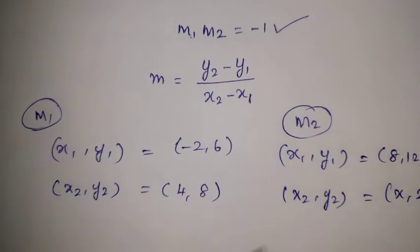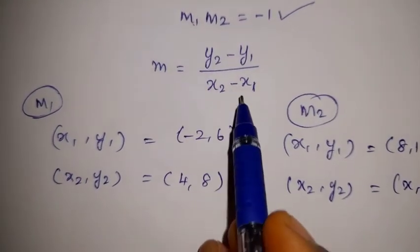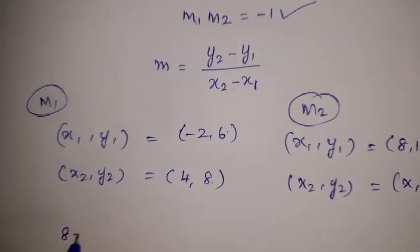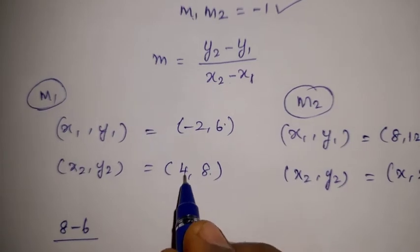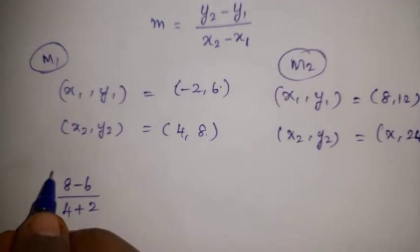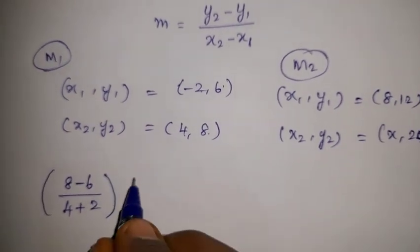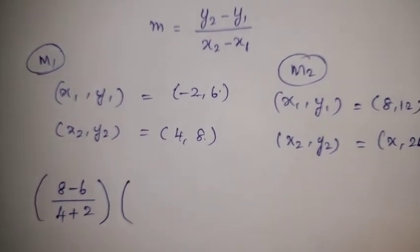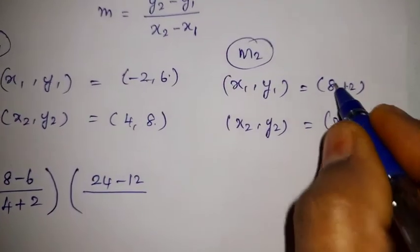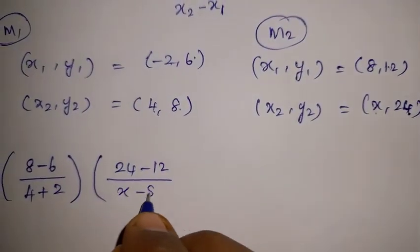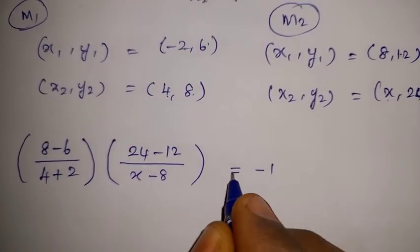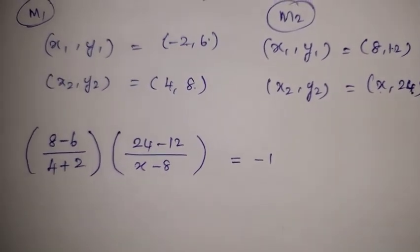Apply m1 into m2. M1 is 8 minus 6 divided by 4 minus of minus 2, that is 4 minus of minus 2 gives plus 2. M1 into M2: M2 is 24 minus 12 divided by x minus 8. So m1 and m2 equals minus 1.